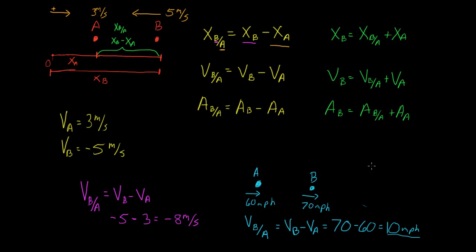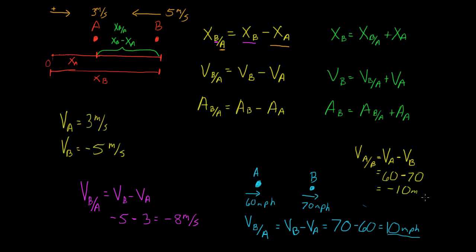Looking at it the other way, the velocity of A with respect to B equals VA minus VB, which is 60 minus 70, giving minus 10 miles per hour. This makes sense too — from the perspective of the other driver, you appear to be falling behind at minus 10 miles per hour. And this is what relative motion is.